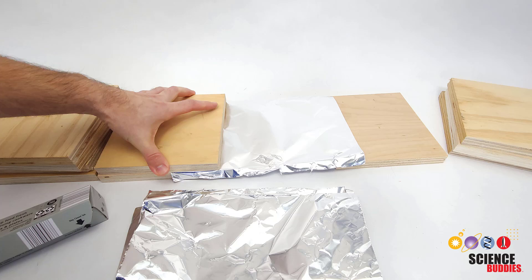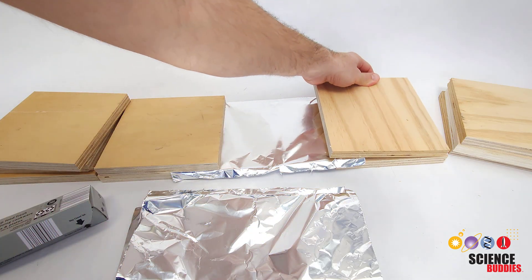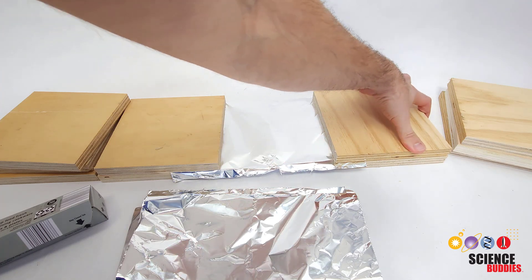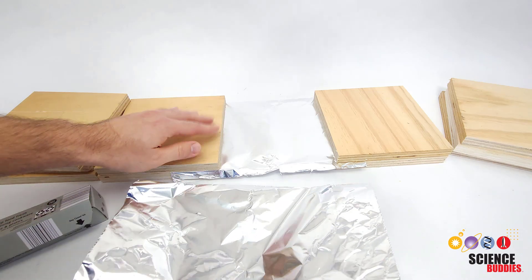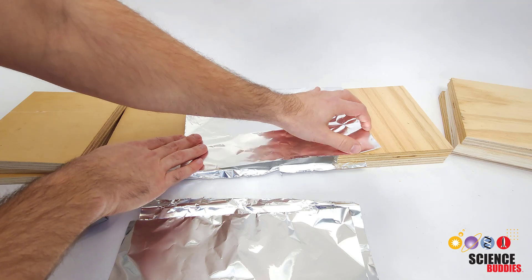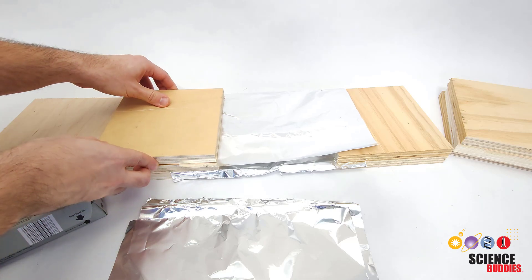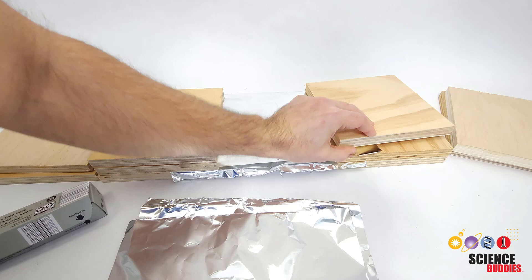Now we're just going to stack these up to make a sandwich, making sure that the edges of the plywood sheets are aligned for as many layers as you would like to test for your experiment. If you want to test four layers of aluminum foil shielding, for example, then you're going to need 10 pieces of plywood. Just keep going, make sure everything stays aligned.